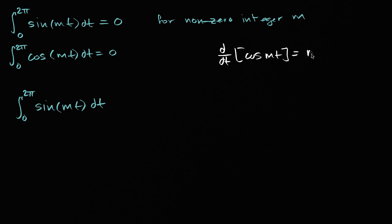This is going to be equal to m, the derivative of mt with respect to t, times the derivative of cosine mt with respect to mt, so times negative sine of mt. Or we could write this as negative m sine of mt.